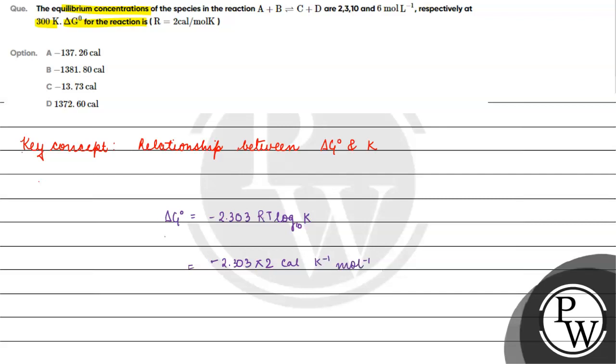T is 300 kelvin. Log base 10 of the equilibrium constant, which is the concentration of C times D divided by concentration of A times B.